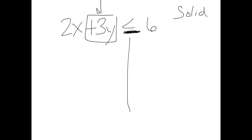The other thing to look at is the coefficient of y — the number in front of y. If it's a positive number, the symbol is not going to flip. So I can look at this and already tell: since that's a +3y, I'll be dividing by 3, so it stays less than. And less than means shade down.